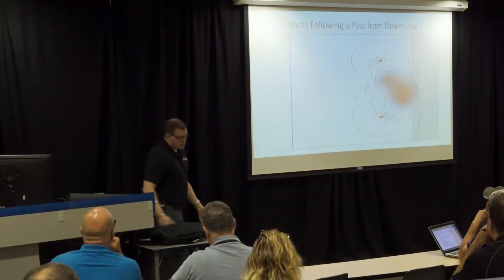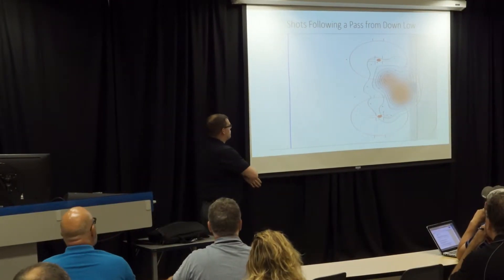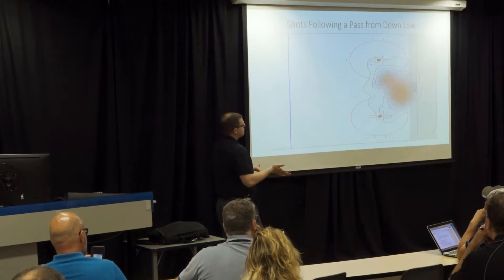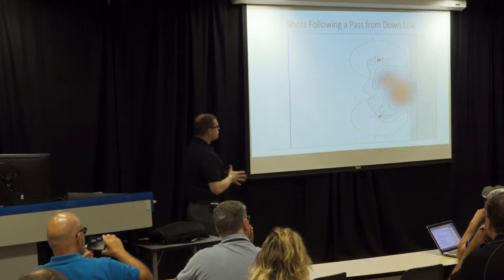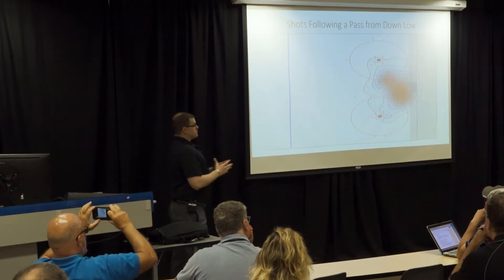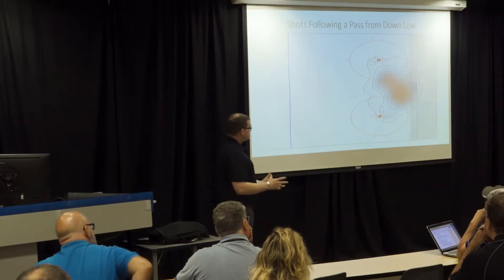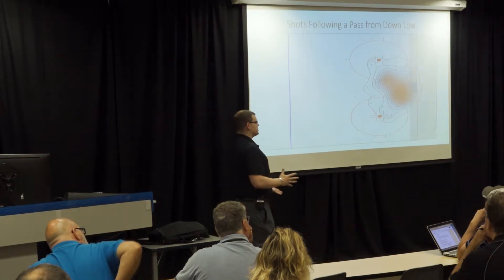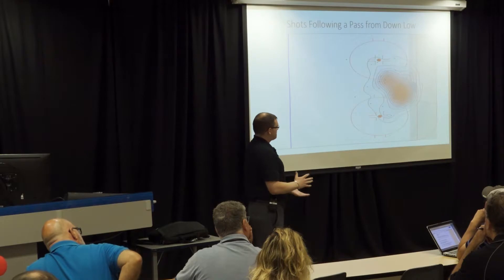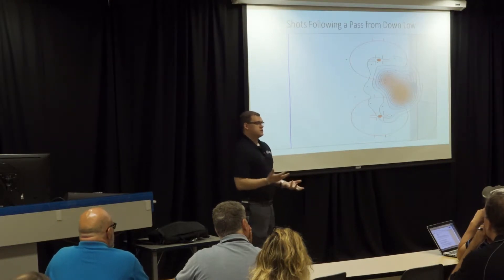So what this is, we're going to go through a couple of these, because typically when you think about power plays, teams will run them from the half walls, either side, or run it up to the point. You can also run it down low. So what we're looking at is passes in different regions in the offensive zone, and then the subsequent shot and where it was.